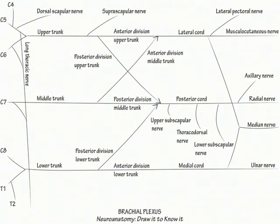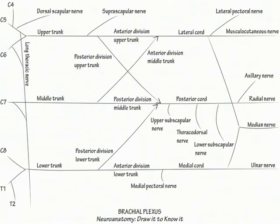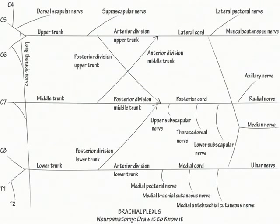Finally, draw the following nerves from the medial cord. The medial pectoral nerve, which innervates the sternal head of the pectoralis major muscle and provides the last 30 degrees of arm adduction. The medial brachial cutaneous and antebrachial cutaneous nerves, which are the sensory nerves that cover the medial aspect of the upper arm and forearm, respectively.